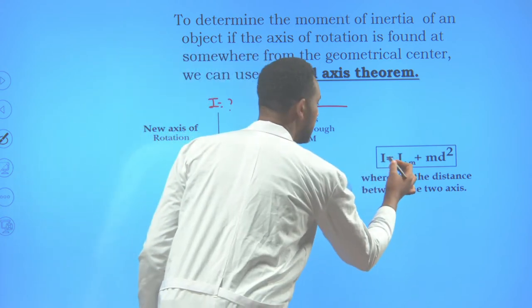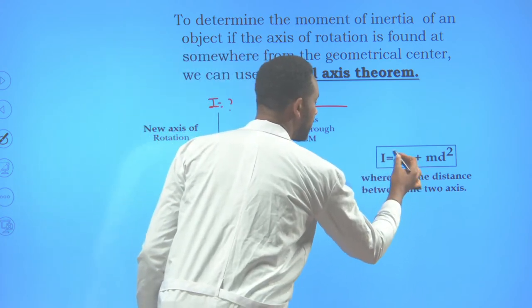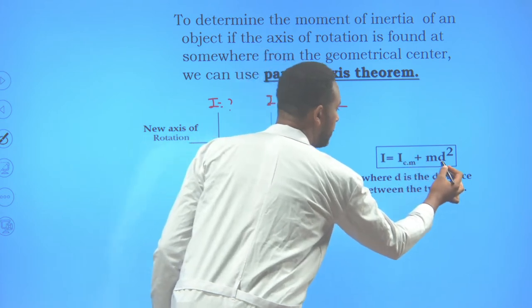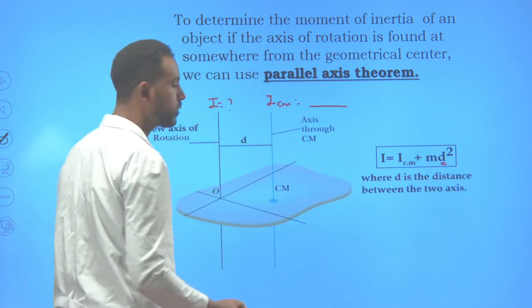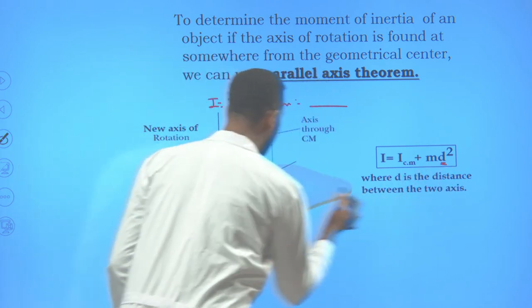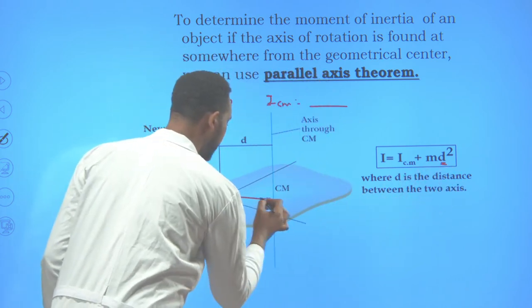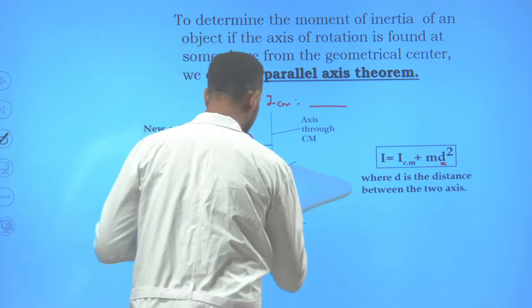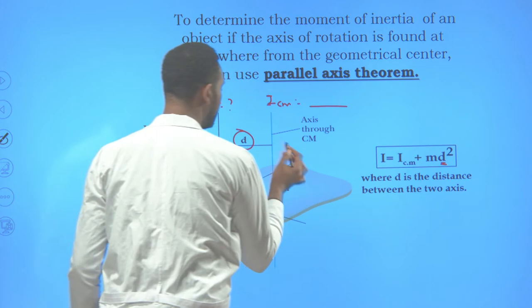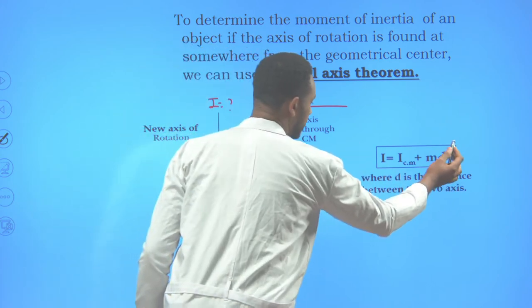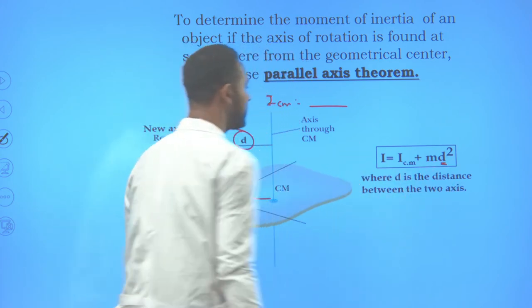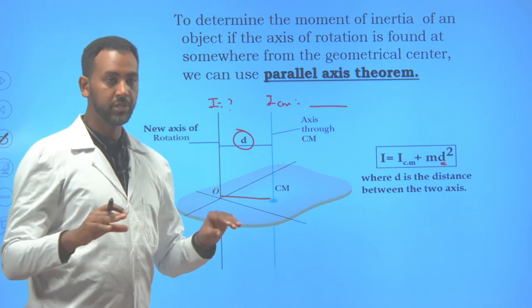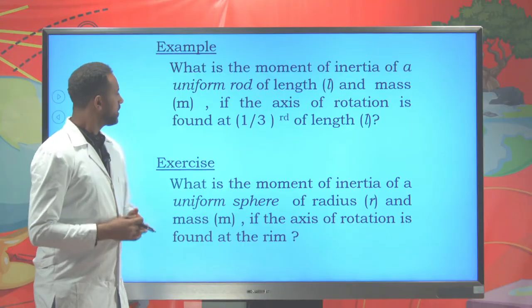Therefore you should apply the parallel axis theorem. The parallel axis theorem states that you should add the moment of inertia of that body through the center, plus md², where d is the distance between the two parallel axes. Therefore, the mass of the object times d squared, added to the center moment of inertia, is how we determine the moment of inertia of solid objects as the axis differs from the center.